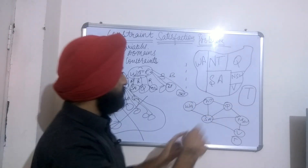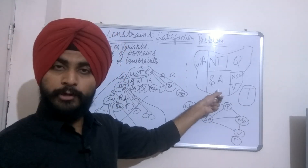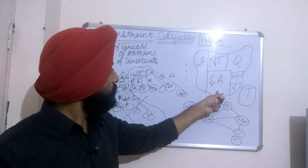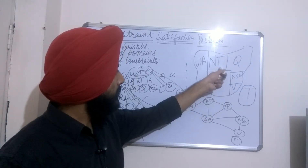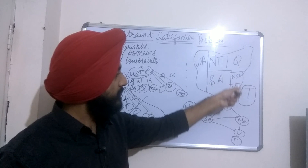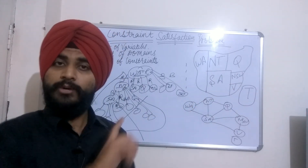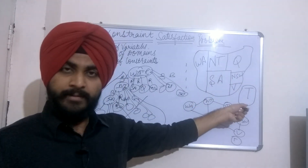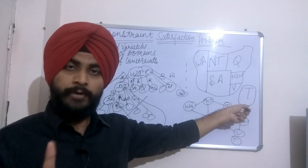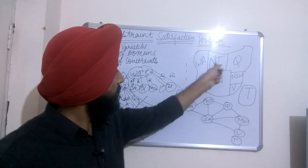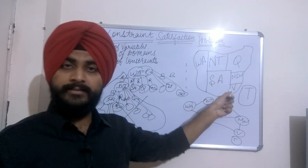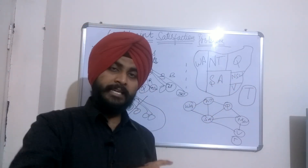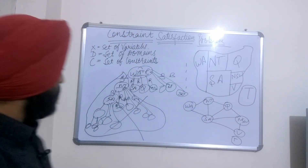Similarly, agar Southern Australia mein blue hai toh uska kya matlab hua? Uske kisi bhi neighbor ke paas blue color nahi aa sakta — haaan, Tasmania ke paas aa sakta hai, no doubt in that. But yahan par kisi ke paas bhi blue color nahi aa sakta. Uska kya faida hua?